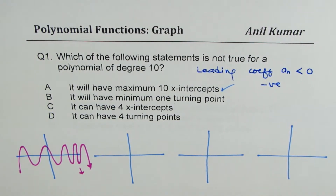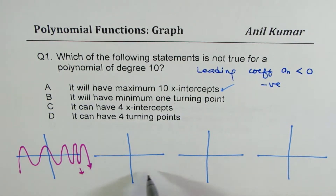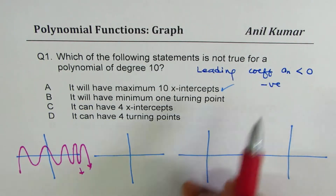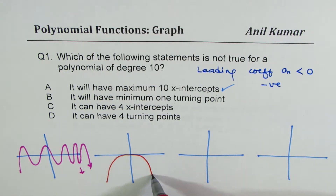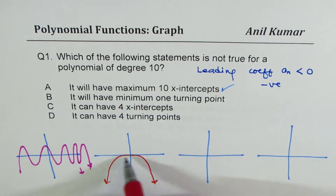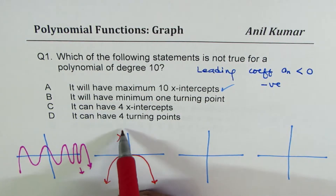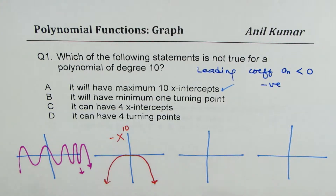It will have minimum 1 turning point. Since the graph of the function has both ends facing the same side — we are taking the leading coefficient as negative — the graph goes something like this with 1 turning point. In this case, we are assuming x to the power of 10 with a negative leading coefficient, so that gives you the situation where there is minimum 1 turning point.